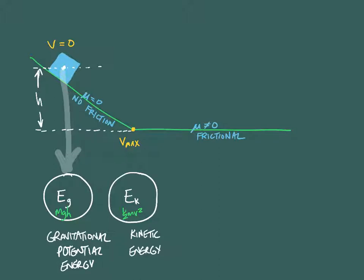The only way to have a complete transfer from one energy storage bin to another is if there are no losses. By loss, I don't mean energy was destroyed — it was transferred somewhere else. The only other place would be friction, counted as the internal energy of the object and the ground, meaning heat transferred. So we'd have MGH equal to half MV squared, and we can get the speed at the end of the ramp.